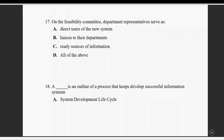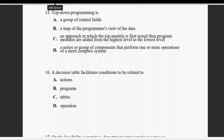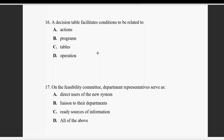Question number fifteen: top-down programming is an approach in which the top module is first tested, then program modules are added from the highest level down to the lowest level. In top-down approach, the top module is first tested and then you go lower — that is the top-down approach.